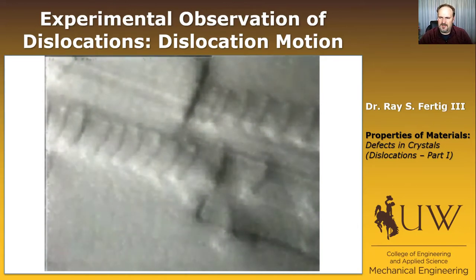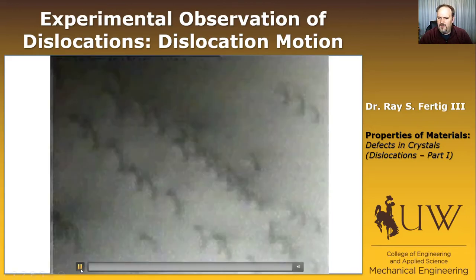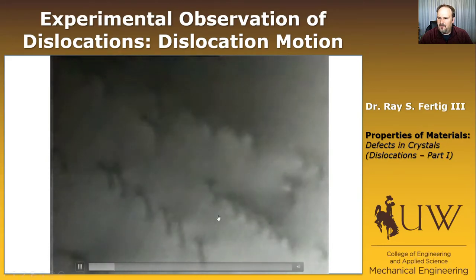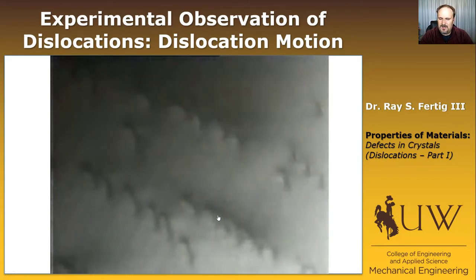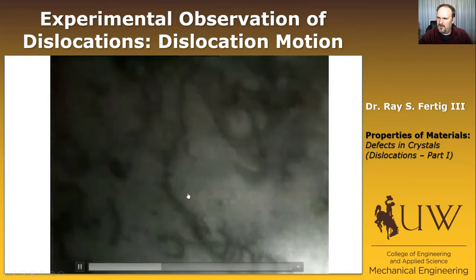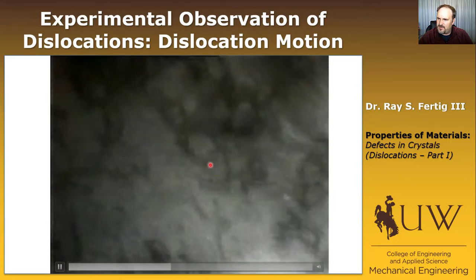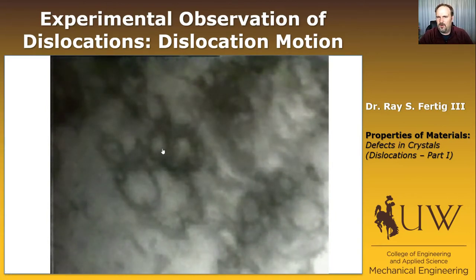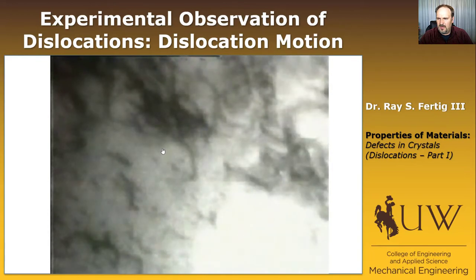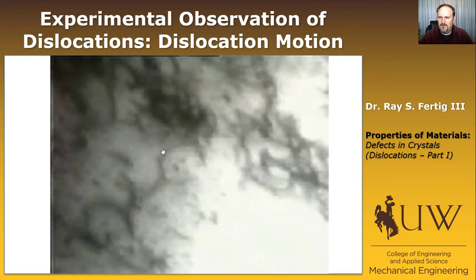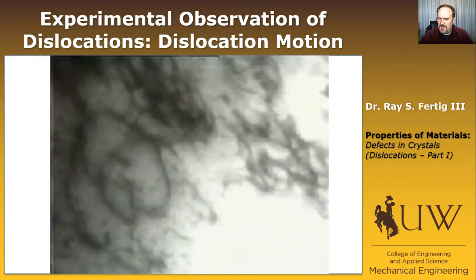Here's a transmission electron microscope movie showing similar features. Under yielding, dislocations are marching through the material, slipping one plane over another and causing permanent deformation. You can see loops growing and then continuing to grow out of the same spot — that's actually a dislocation source. You're seeing dislocations being nucleated as the load progresses: a new dislocation is created and moved, then another is created and moved.